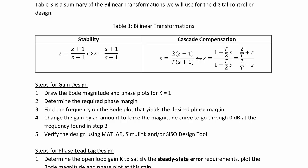And for cascade compensation, the transformation is s is equal to 2 times z minus 1 over t times z plus 1, which equals z, which equals 2 over t plus s over 2 over t minus s. And this is what was used in the prior table to convert the integral and derivative controllers using bilinear transformations.